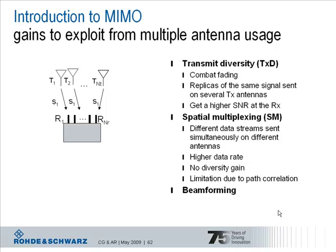MIMO basically means using multiple antennas at both transmitter and receiver side, but what are the gains to exploit? First of all, a diversity gain can be exploited. By transmitting the same data streams over multiple transmit antennas, for example at a base station site, the receiver has multiple replicas of the same signal available and so at the receiver side you can achieve a higher signal to noise ratio. This diversity gain is very efficient to combat fading over the mobile radio channel.